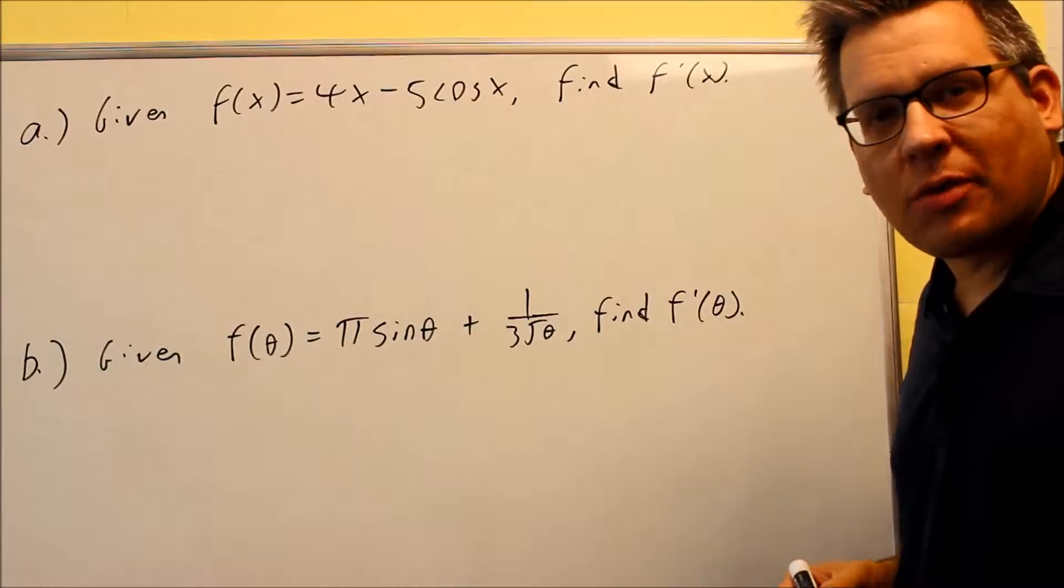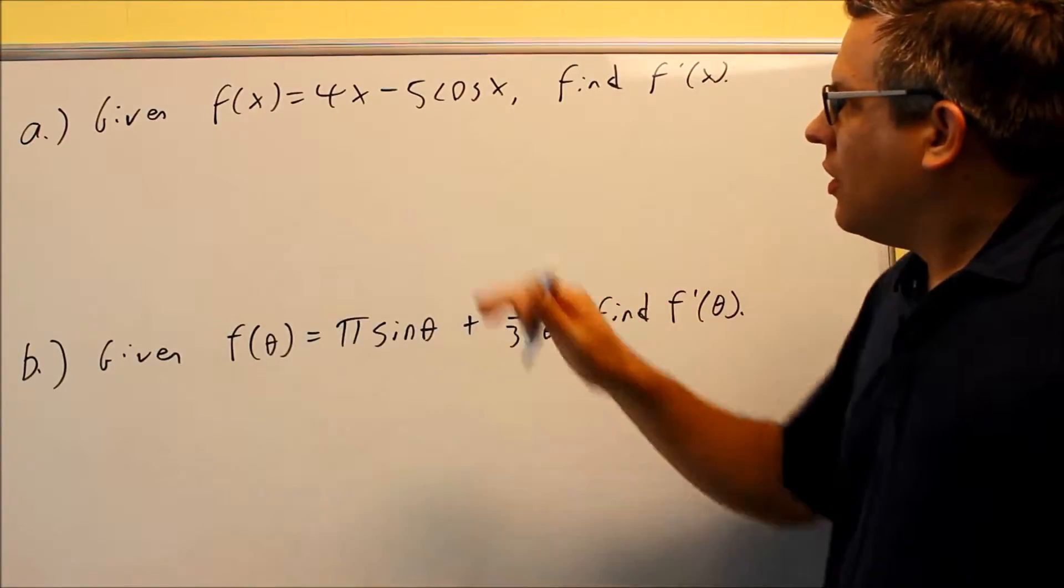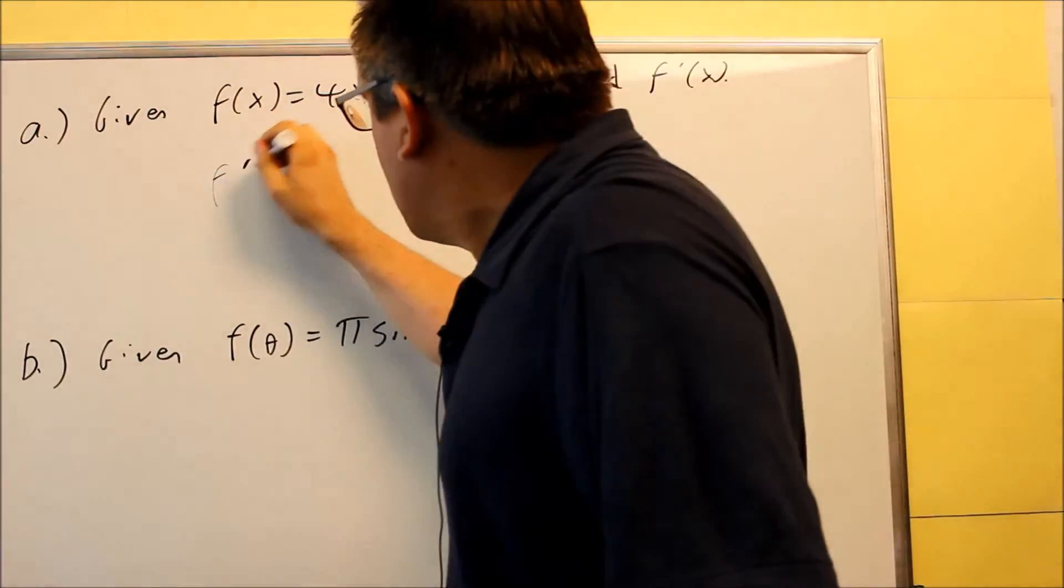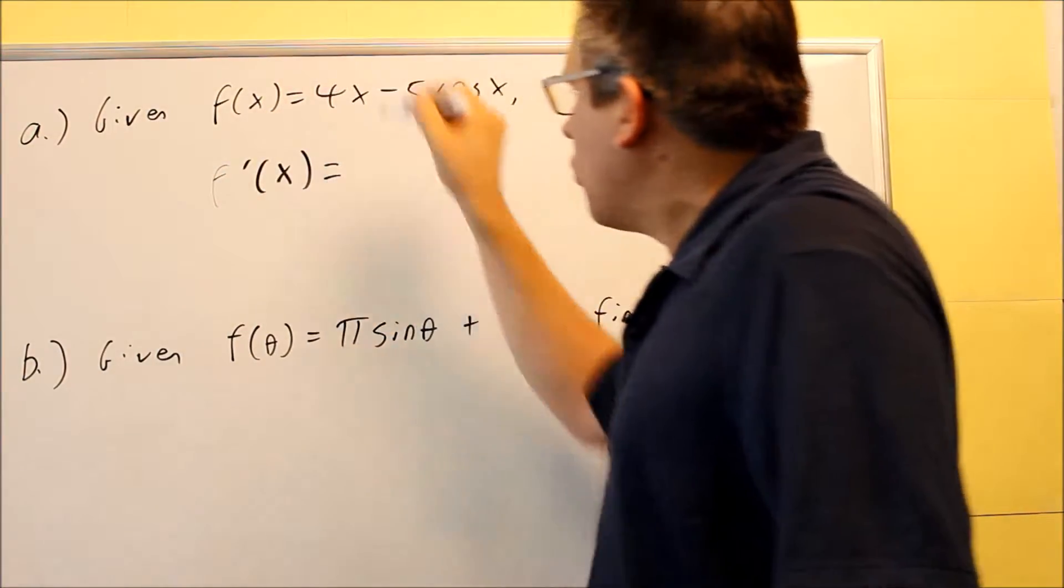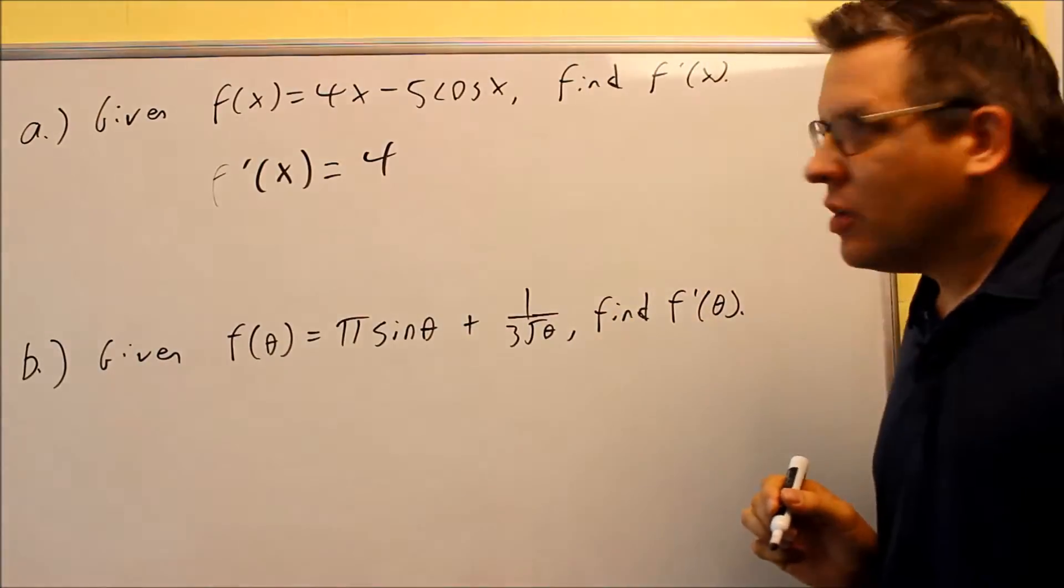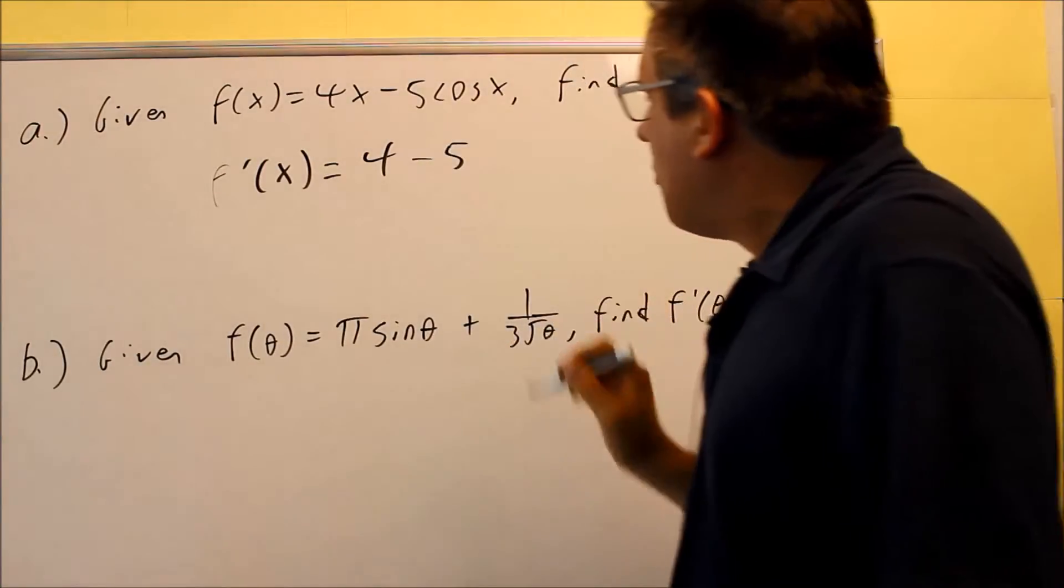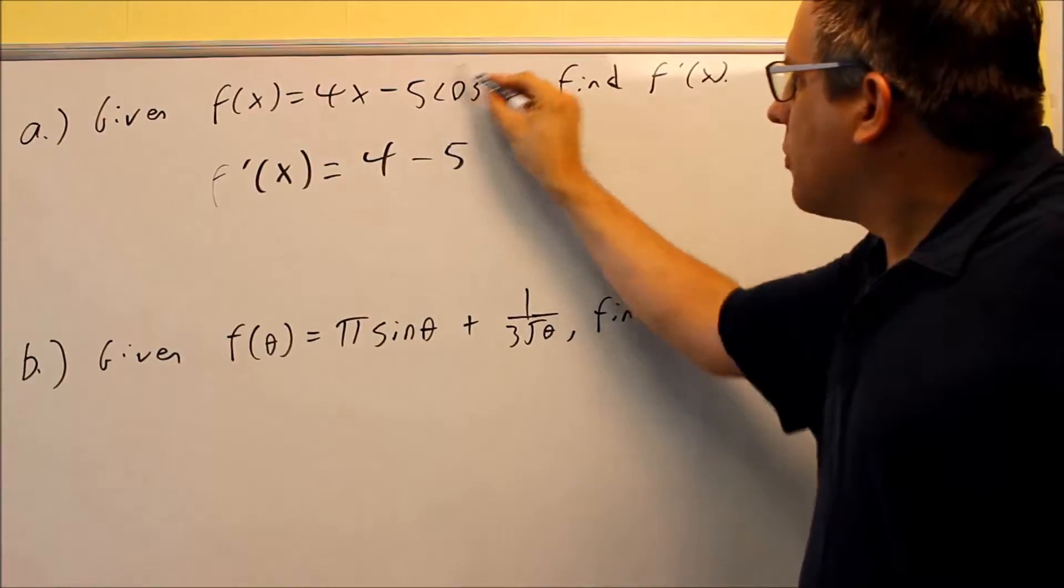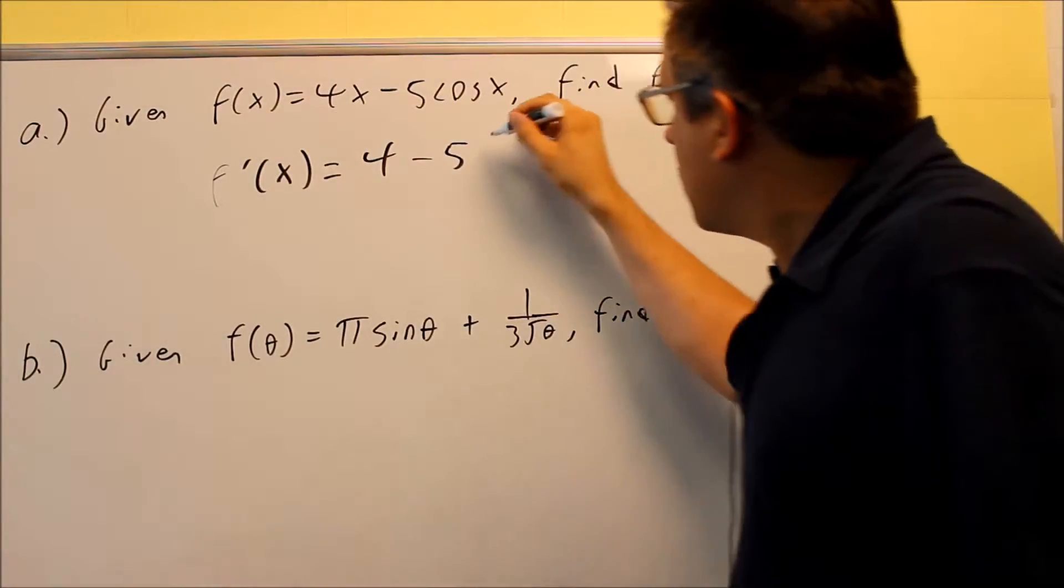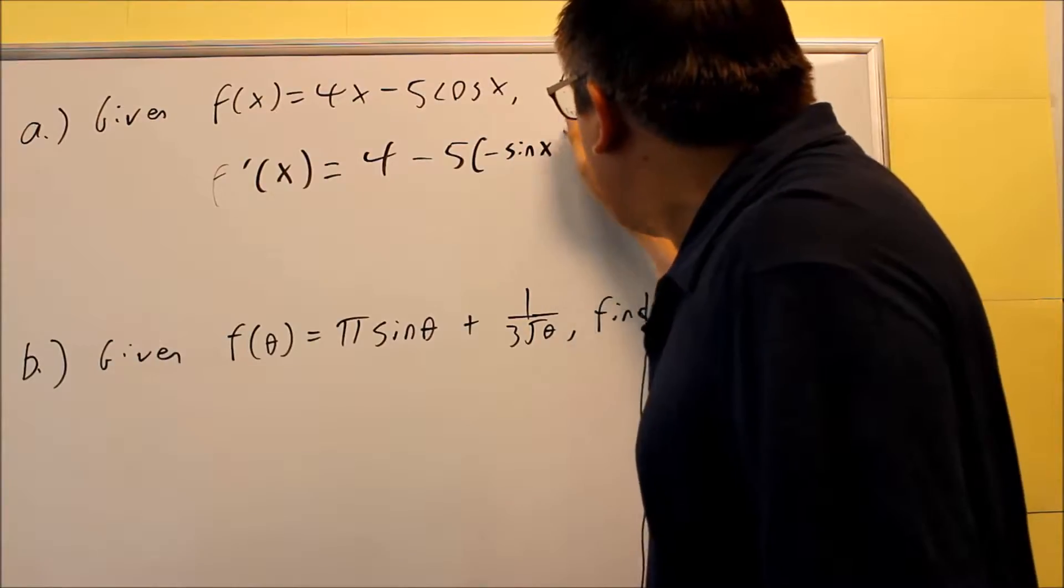Let's do that with these two examples. For this one, we're going to take the derivative of each term separately. So f'(x), the first one is a constant times an x, so you're going to be left with a constant when you take the derivative. The second one, we're going to do -5 and then we're just going to multiply it by the derivative of cosine x. So the derivative of cosine x is automatically negative sine x.